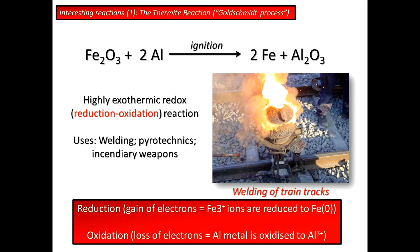Let's look at some interesting reactions. The thermite reaction, also called the Goldschmidt process, is essentially the reaction of an iron oxide reacting with aluminium metal. With ignition, the aluminium displaces the iron atoms to give you aluminium oxide and iron metal. This is highly exothermic, and is essentially a redox reaction — where reduction means the gain of electrons. The iron(III) ions are reduced to iron(0) metal, used for welding of train tracks, while aluminium is oxidized from aluminium(0) to aluminium(III). Uses include welding of train tracks, pyrotechnics, and even weaponry.